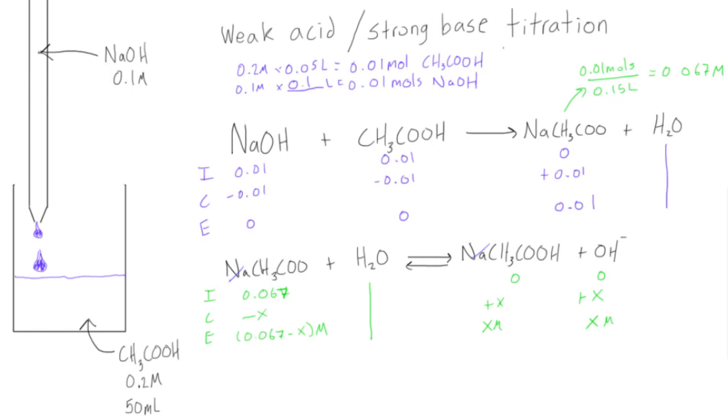We know that our KB is going to be equal to our conjugate acid times the concentration of OH minus all over our weak base. We can find the KB because we know that KW is equal to KA times KB, so KB equals KW over KA.